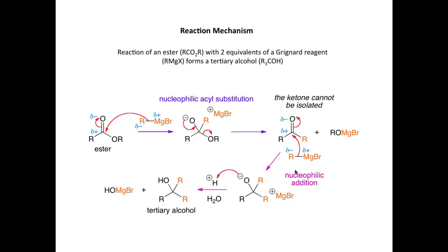The conversion of the ketone through to the tertiary alcohol is a nucleophilic addition reaction. In summary, overall we've converted the ester into a tertiary alcohol using two equivalents of the Grignard. The first reaction, with the first equivalent of Grignard, forms a ketone in a nucleophilic acyl substitution, and the second reaction, with the second equivalent of the Grignard, forms the tertiary alcohol in a nucleophilic addition.